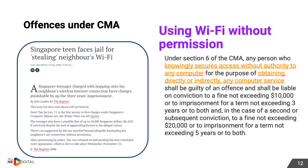Here is an interesting one. Section 6 of the CMA states that any person who knowingly secures access without authority to any computer for the purpose of obtaining, directly or indirectly, any computer services, has committed an offence. What this means is that if you use your neighbour's Wi-Fi without permission, it is a crime under the CMA. Although this is a little-known law, there have been prosecutions going back to 2006.